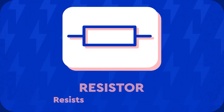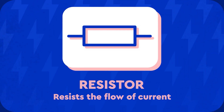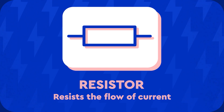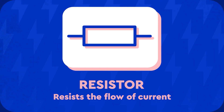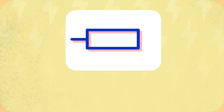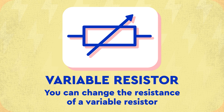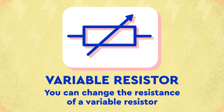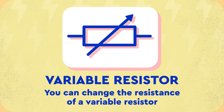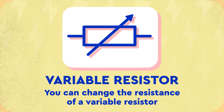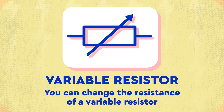A fixed resistor is used to resist the flow of current. The resistance of a fixed resistor is always the same. This is a variable resistor — you can change its resistance, allowing you to change the current in a circuit.